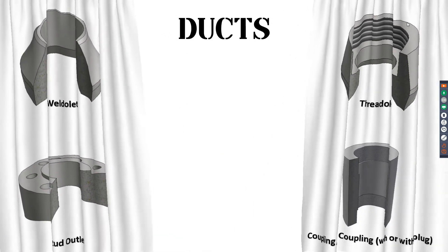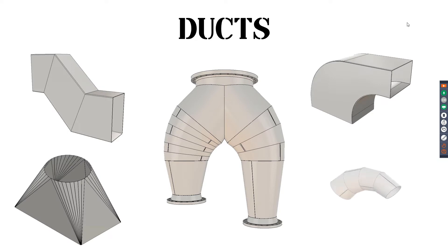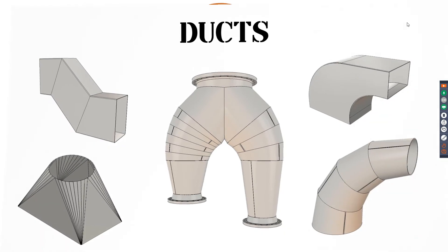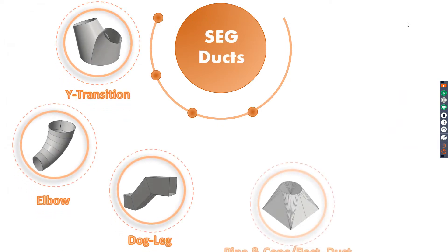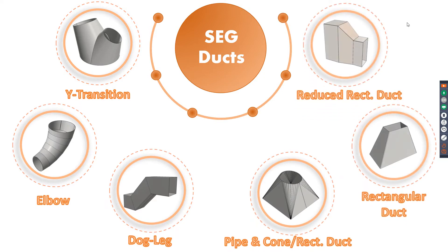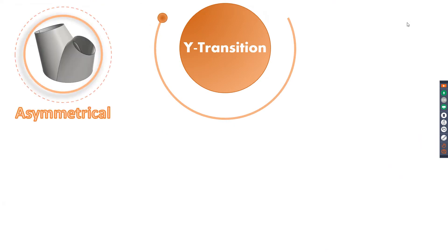Now we will discuss some features for ducts. SCG version 4 supports duct features. The available types of ducts in SCG software are: Y-transition connection, elbow, dogleg, pipe, cone, reduced duct, rectangular duct, and reduced rectangular duct. Each type has sub-types — for example, for the Y-transition we have asymmetrical connection, symmetrical connection, rectangular T, rectangular Y, and shifted Y.